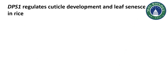At the end I am going to show you one example. Here is one published paper and let's see how we will divide its introduction into small headings. The title is DPS1, which regulates cuticle development and leaf senescence. We will start first by talking about photosynthesis, because photosynthesis is the broader general category, and both cuticle and leaf are related to photosynthesis.